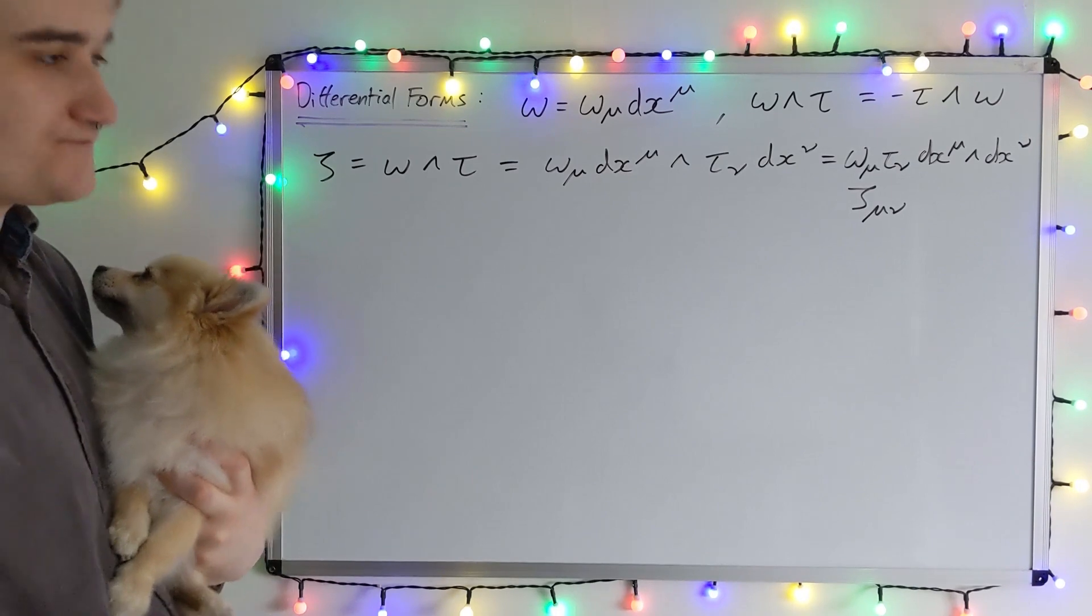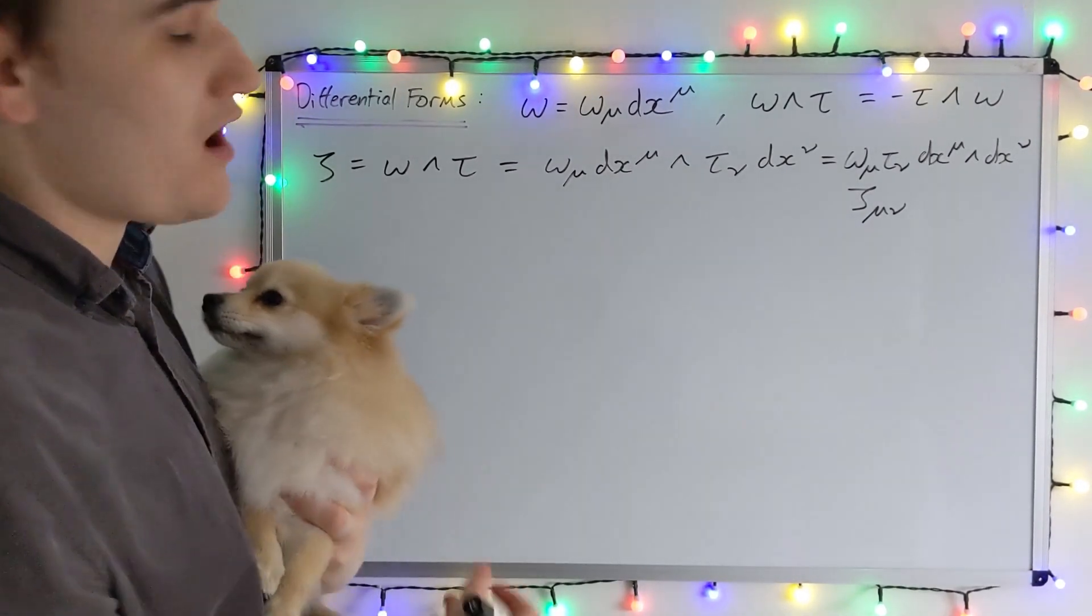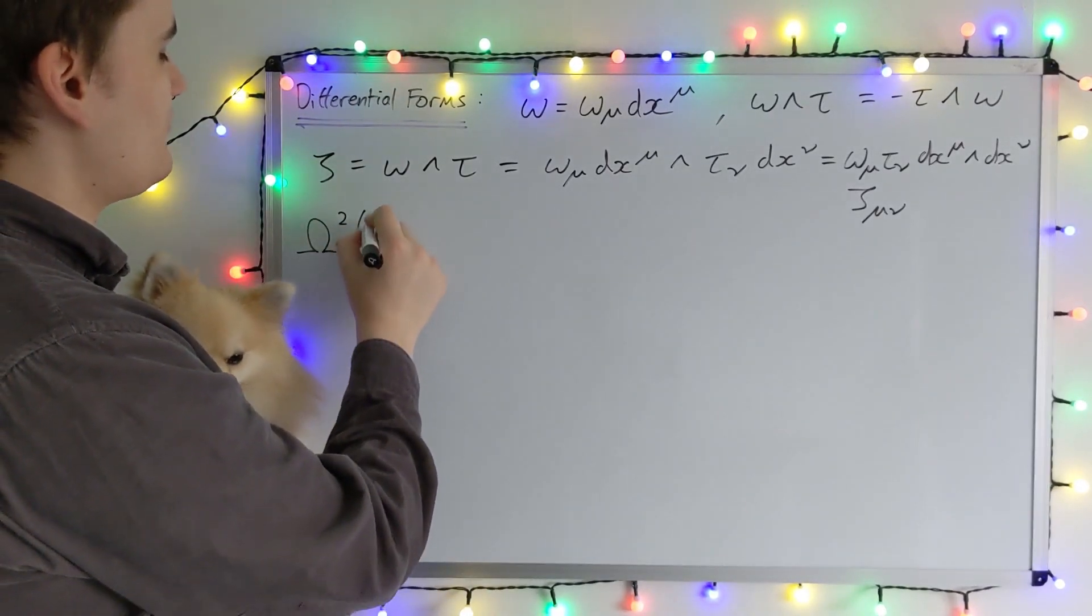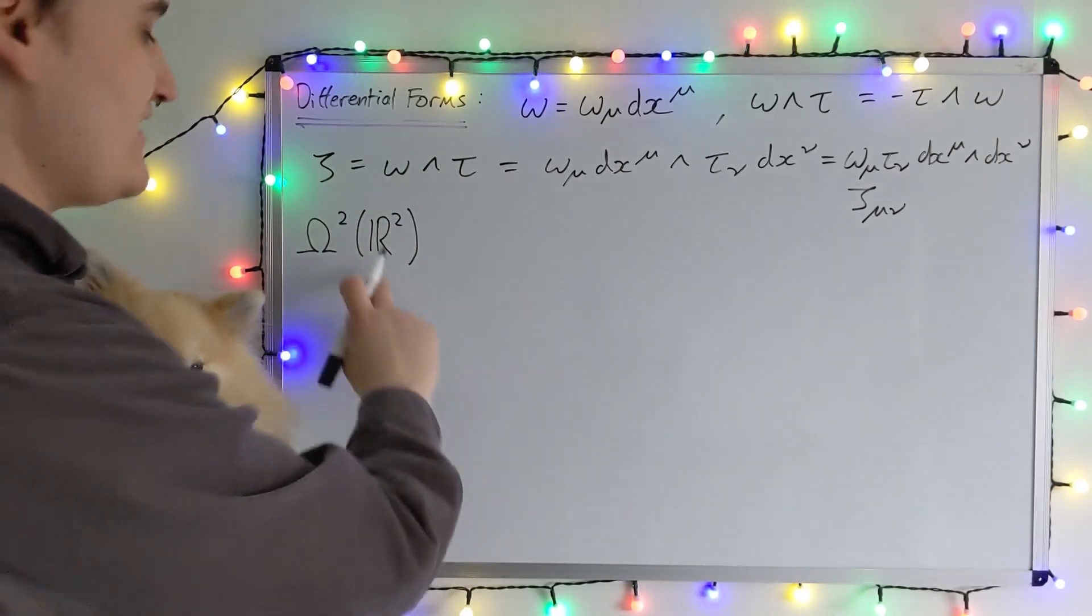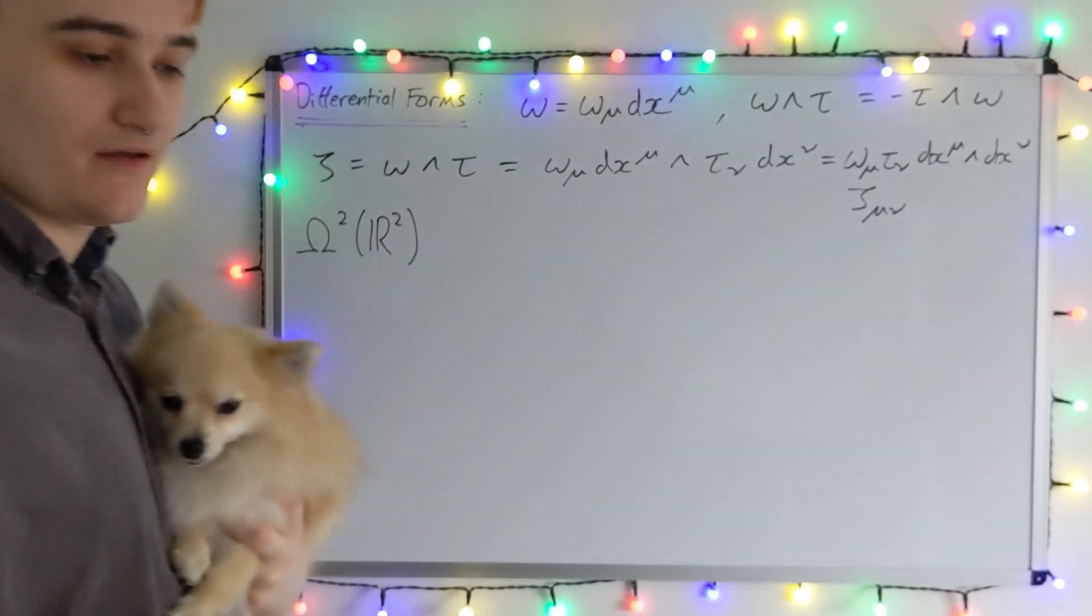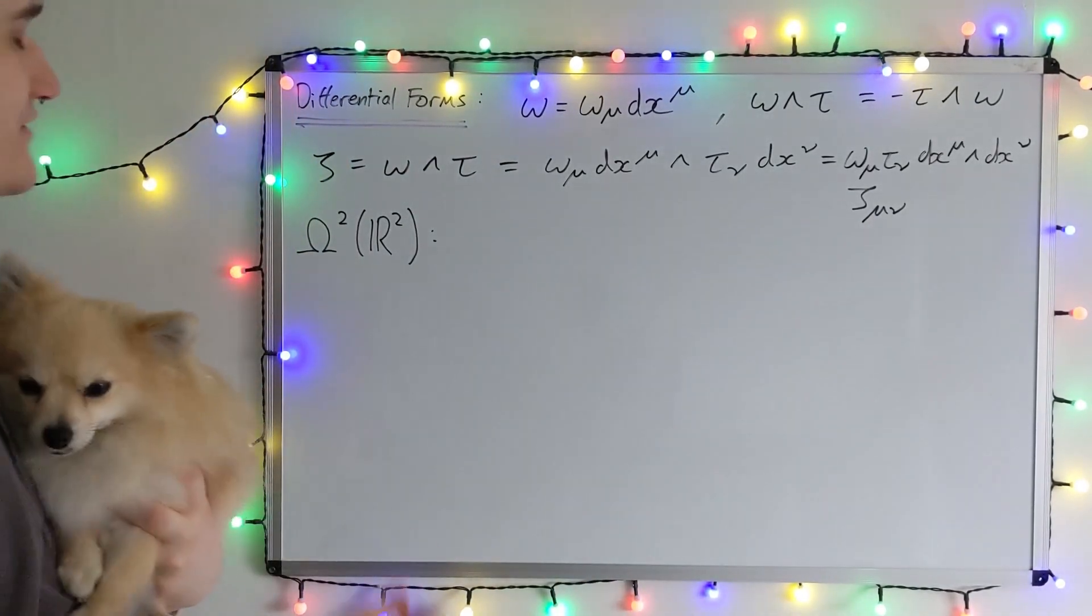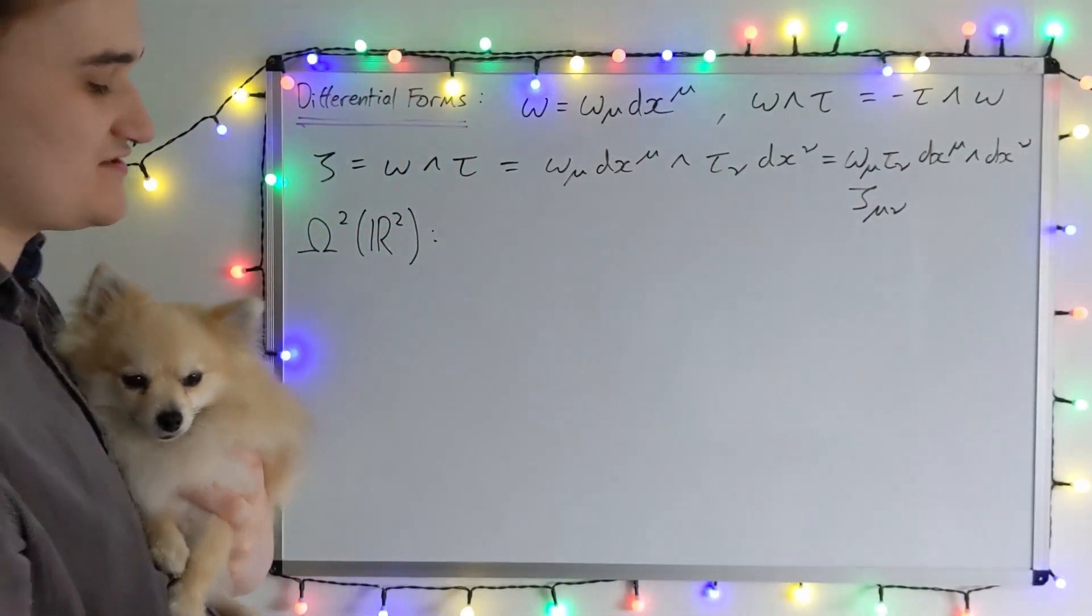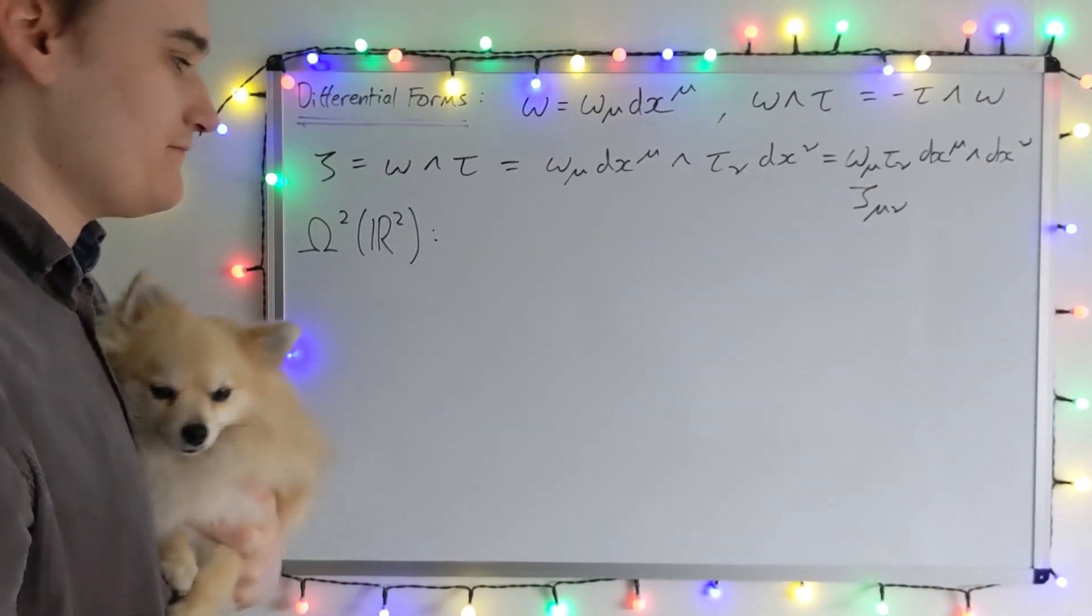So for simplicity's sake now, let's consider the case of R2. So we're going to consider a two form over R2. Now what does it mean to be over R2? Well essentially it just means that our indices are going to be two-dimensional. They're going to run from one to two. So I could now begin by writing out all the terms in this sum.